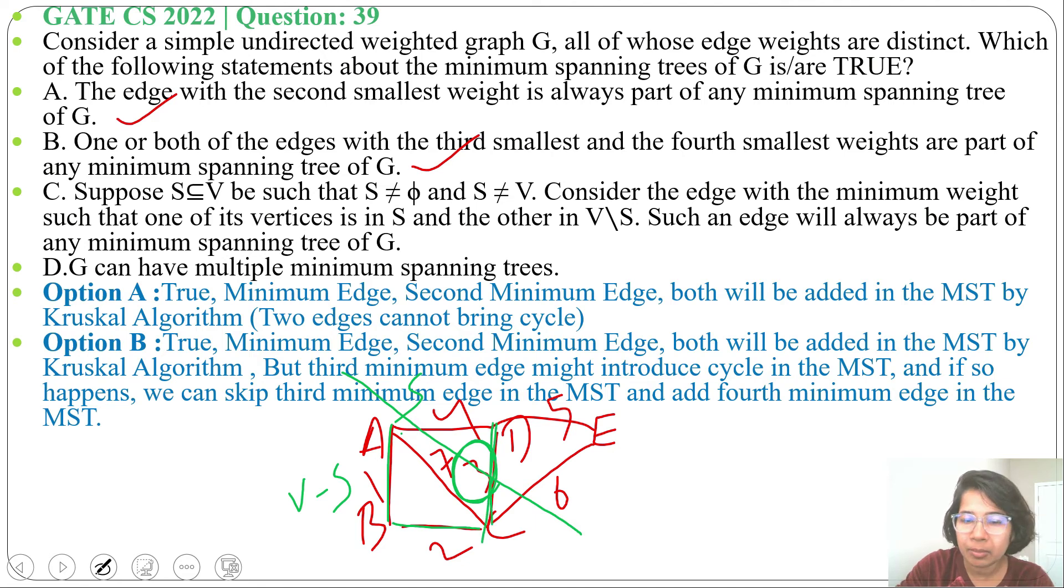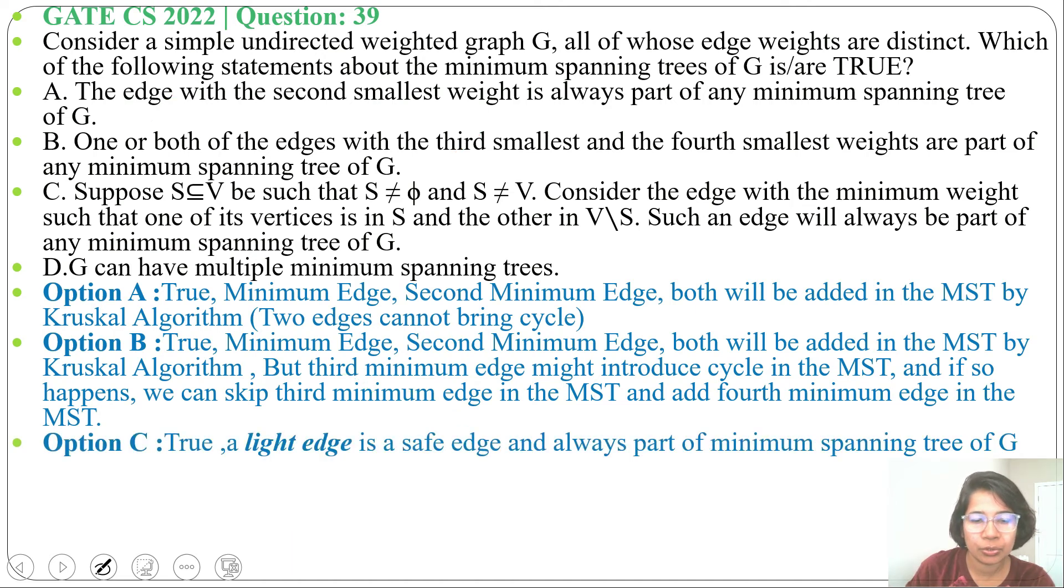And the edges crossing the cut are AD, DC, and CE. So here lowest weight is 3, so the minimum weight that is crossing the cut is the lightest edge in minimum spanning tree. Next will include that, that is a safe edge for minimum spanning tree. So option C is true. A light edge is a safe edge and always part of minimum spanning tree.